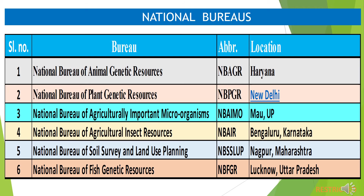Under ICAR, there are six national bureaus: National Bureau of Animal Genetic Resources (NBAGR), Karnal, Haryana; National Bureau of Plant Genetic Resources (NBPGR), New Delhi; National Bureau of Agriculturally Important Microorganisms, Mau, Uttar Pradesh; National Bureau of Agriculturally Important Insect Resources, Bengaluru, Karnataka; National Bureau of Soil Survey and Land Use Planning, Nagpur, Maharashtra; and National Bureau of Fish Genetic Resources, Lucknow, Uttar Pradesh.